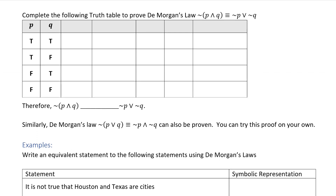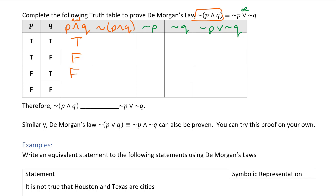I have P and Q, and I need to find the truth values for P and Q, then negate that column to get the left side. For the right side I need not P, not Q, and then the disjunction of not P or not Q. Starting with the conjunction P and Q — it's only true when both are true. True-true: true. True-false: false. False-true: false. False-false: false.